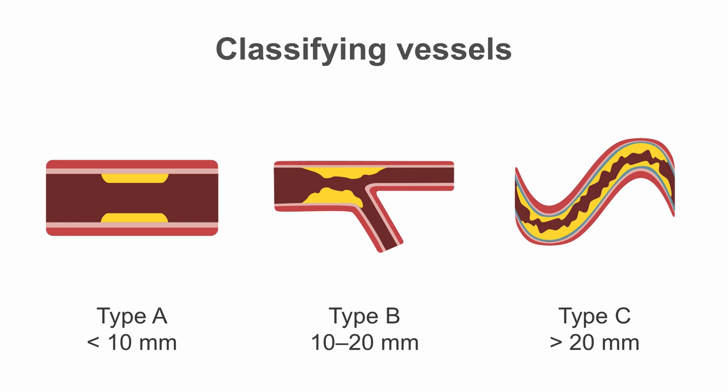Type B lesions are usually between 10 and 20 mm in length, of moderate tortuosity, and moderately angulated. This classification includes osteal disease and disease with major branches requiring two guide wires. It can include lesions with moderate calcification or thrombus.